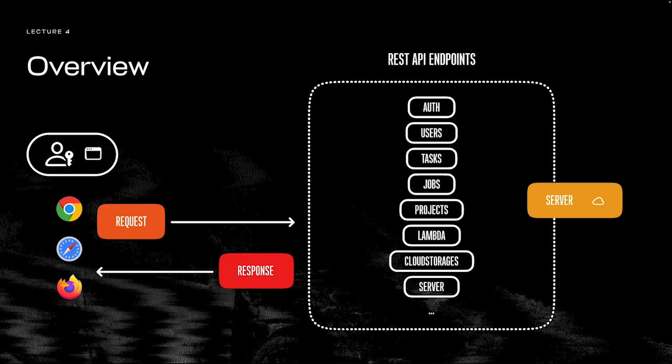For example, when we log in, we send a POST request to an endpoint in the auth group that includes our credentials, like username and password. The server logs us in, creates an entry in the database representing the action, and responds with a key. This key can be used in subsequent requests by the user to identify themselves. This pattern, where the user sends a request, the server performs some actions, and the server sends a response, applies to all endpoints.